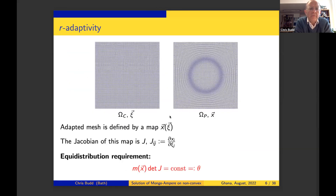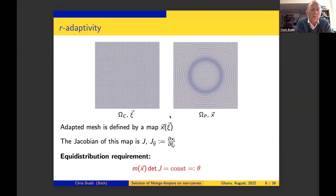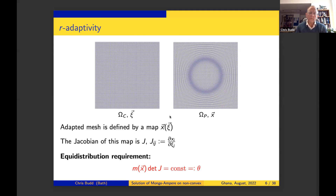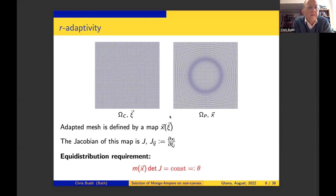We think of a map from the computational domain to the physical domain. Assuming this map is differentiable with a well-defined Jacobian, the cell area in the physical domain is the determinant of the Jacobian. The equidistribution requirement becomes: M times det(J) equals a constant. That is the equation we solve to find the map from the computational to the physical domain — a fully nonlinear equation, and our equidistribution requirement.